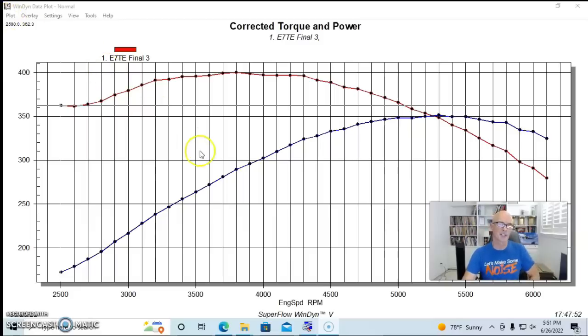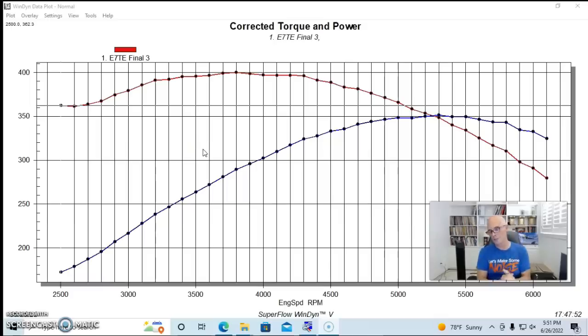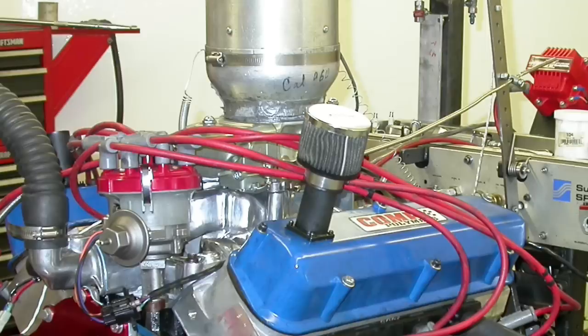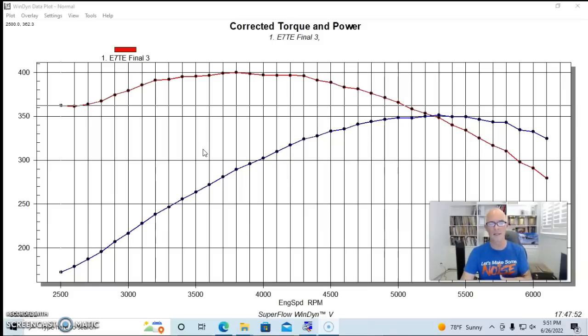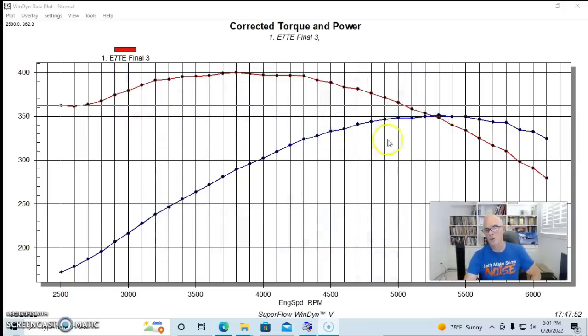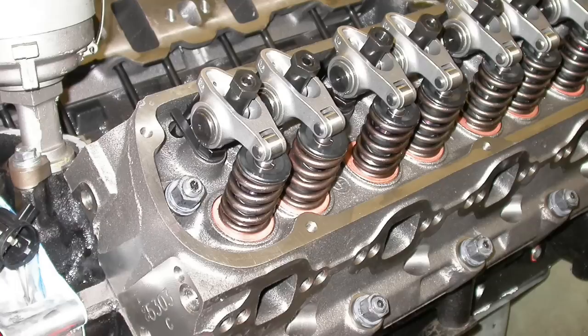So we configured this thing with an Extreme Energy 274 hydraulic roller camshaft. I'll go ahead and put the specs up, it's the 224/232 cam that I run on a lot of small block Fords. It had inch and five-eighths headers, it had a dual plane RPM style air gap, this was a Crosswind version of that, a 650 Demon, an MSD distributor, and it had a decent oil pan and that kind of stuff on. And we naturally tuned every combination with the jetting and timing to try to optimize the power.